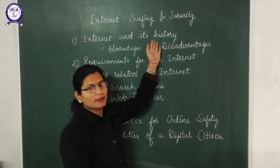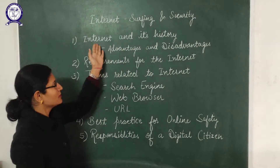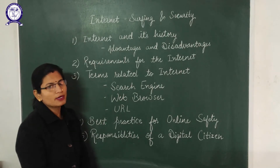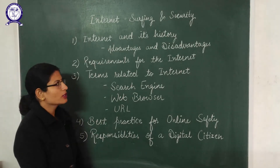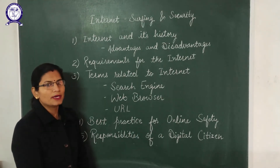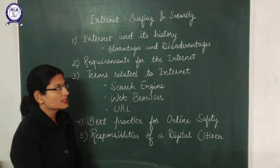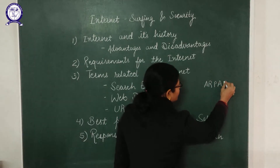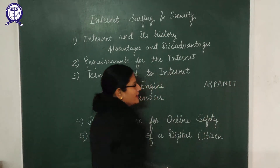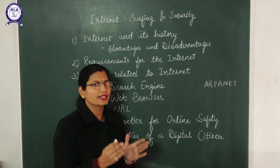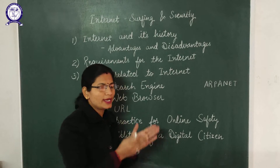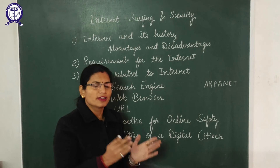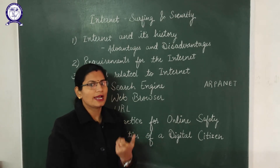Now, how it was developed? How did it come into the mind of people that we need such type of technology? Basically, in 1969, there was a Department of Defense of USA which started working on this technology and they developed a basic internet that was known as ARPANET. ARPANET stands for Advanced Research Project Agency Network. It was developed by that particular department for sharing information regarding new technologies developed there.